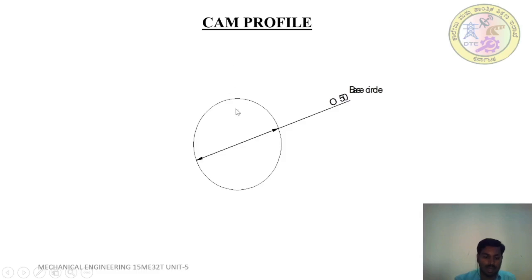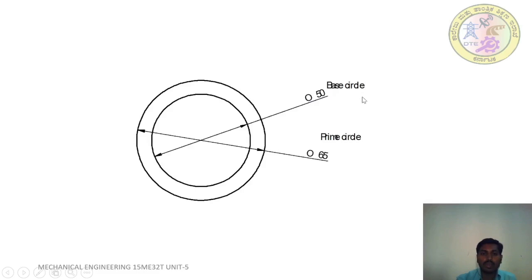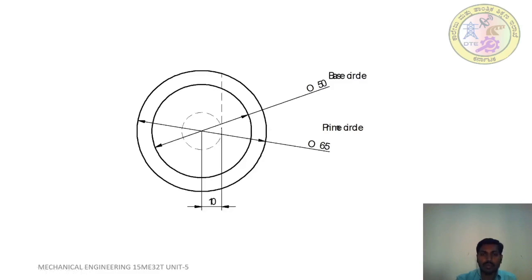In order to draw the CAM profile, draw a base circle of radius 25 mm (diameter 50 mm). For the prime circle, radius equals CAM radius plus roller radius: 25 plus 7.5 equals 32.5 mm, so diameter is 65 mm. Also draw an offset circle of radius 10 mm.